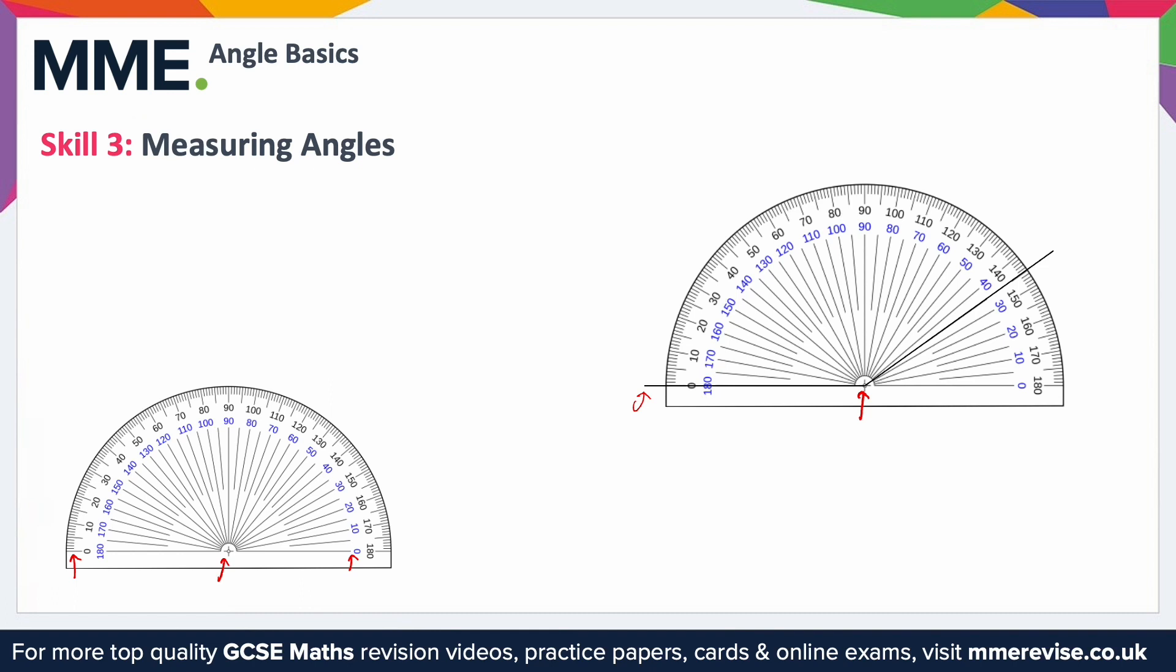You can see the protractor the crosshair is lined up perfectly and the zero mark is lined up perfectly with the other line. Now because I've used the zero on the outside scale when I measure I need to make sure I use the outside scale as well. Going round you'll see there's 140, there's 150, so it's somewhere in between those two. You can see it's exactly in the middle - there's four little lines before it and four little lines after it so it must be right in the middle so this must be 145 degrees.